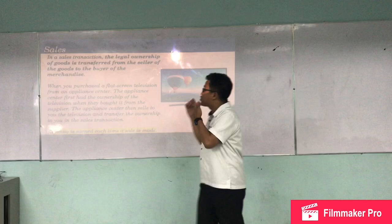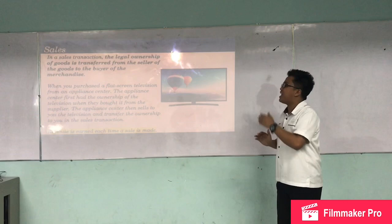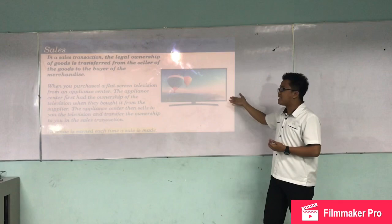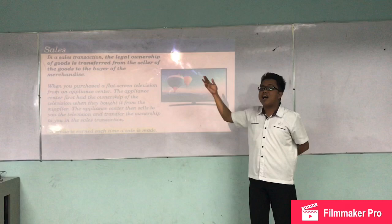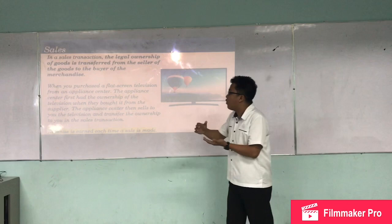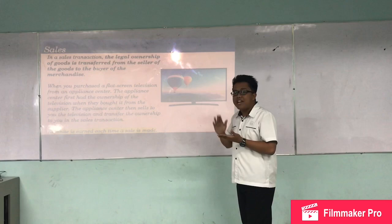In a sale transaction, the legal ownership of goods is transferred from the seller to the buyer. For example, when you purchase a flat screen television from an appliance center, the appliance center originally owned the television when they bought it from the supplier or manufacturer. The appliance center then sells to you as the customer and transfers ownership. Revenue is earned each time a sale is made, regardless of whether payment has been received.